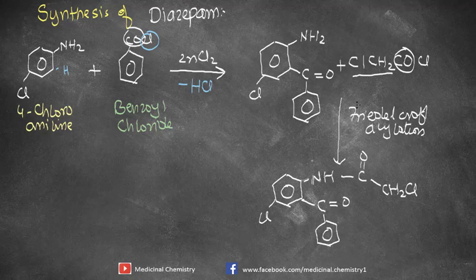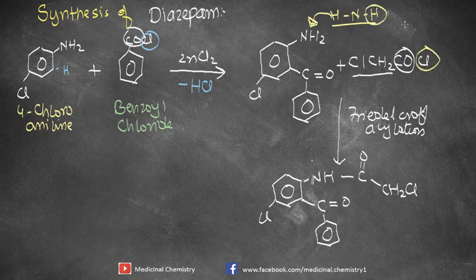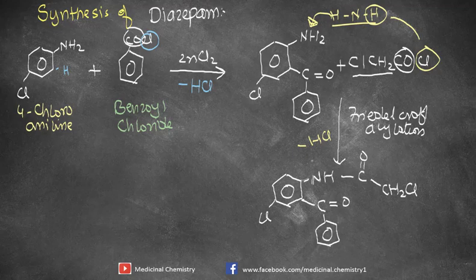What happened here is that from the NH2 group, one hydrogen is removed along with the chlorine to again form HCl. The remaining compound retains the carbonyl oxygen, the Cl, and the CH2 group — all of which remain the same.